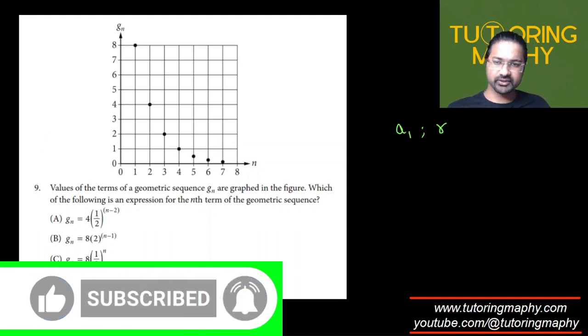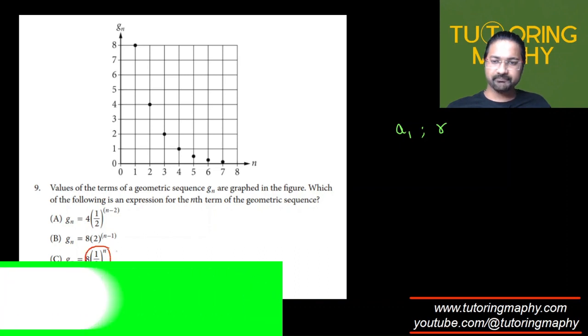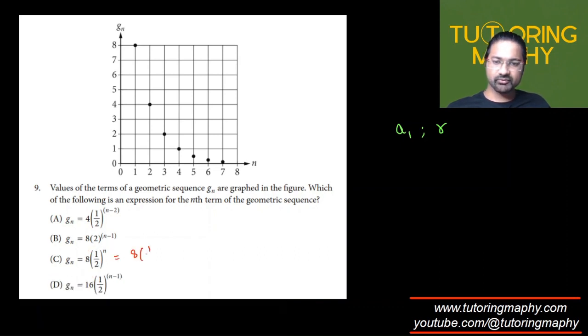I will show first using this method. If n is 1, then this will become 8 times 1 over 2, which is just 4, but I need 8, so this is not correct. If n is 1 over here, then 1 minus 1 will become 0, and 1 over 2 raised to 0 is just 1, which gives 16, so this is also not possible.